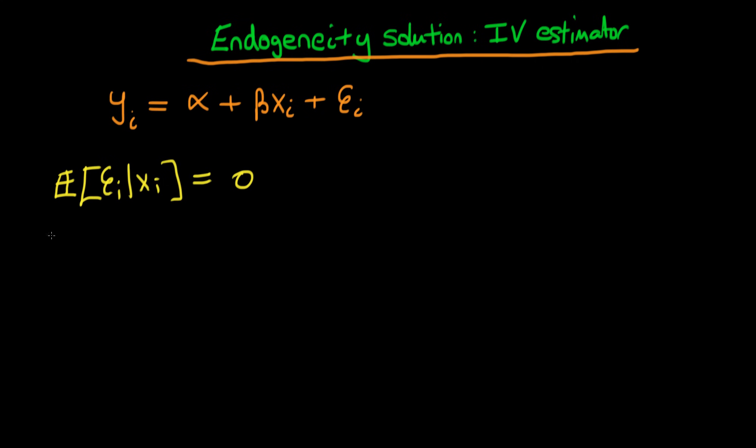The first circumstance is if we have omitted variables. If these variables are correlated with our x term, then omitted variables cause a violation of this condition, so the expectation of the errors given our independent variables x_i doesn't equal 0.